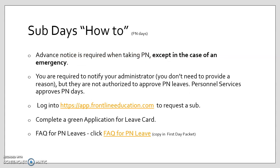How to request a sub for PN days. Requesting a sub for PN days is a little different — advanced notice is required when taking PN days, except in the case of an emergency. If you need to use a PN day for an emergency, follow the same steps as you would for a sick day. You're required to notify Donnie in advance of taking a PN, but you don't need to tell him why, and he's not authorized to approve your PN leave — Personnel approves PN days. The three steps are: one, notify Donnie; two, log into Frontline and request a sub; three, complete a green Application for Leave card and give it to me. I've included a link for FAQs for PN leave on this slide, and you have a hard copy in your packet. Please call me if there's an emergency or if you need assistance of any kind.